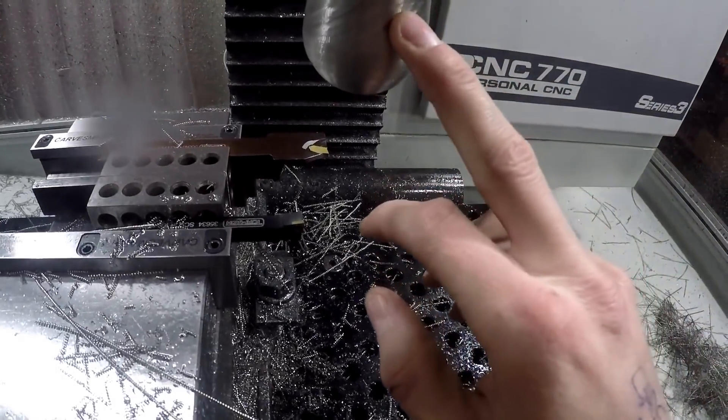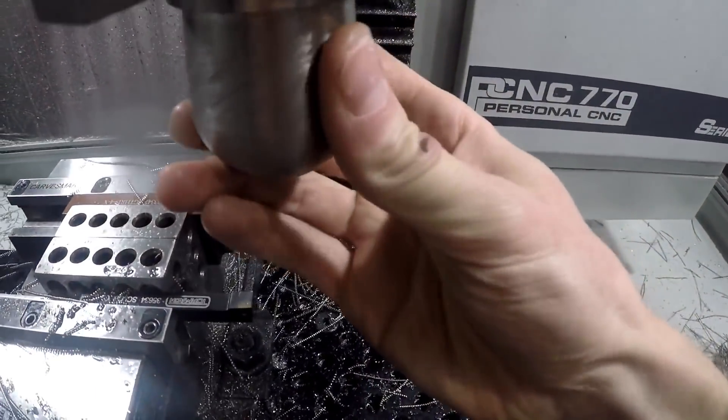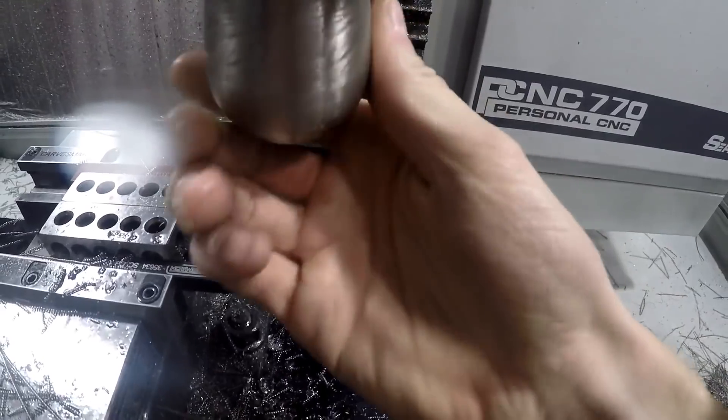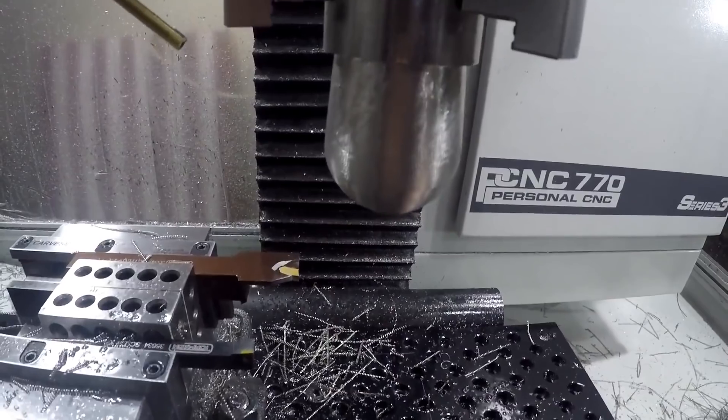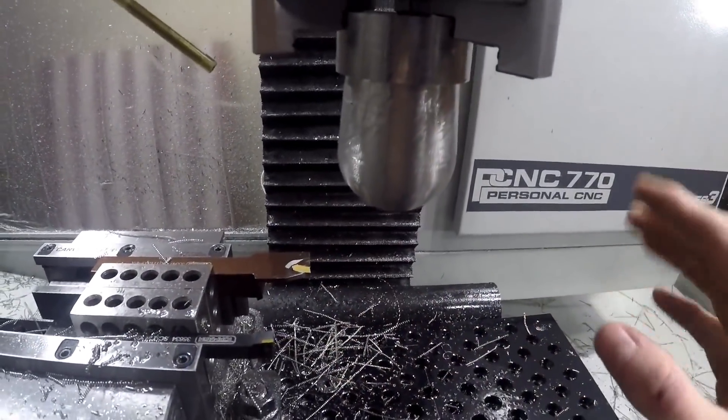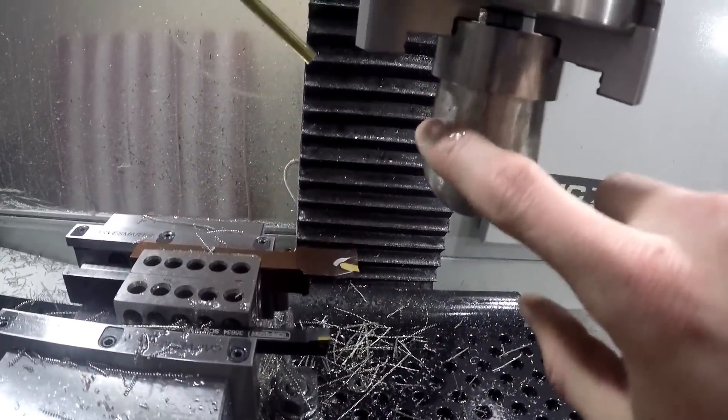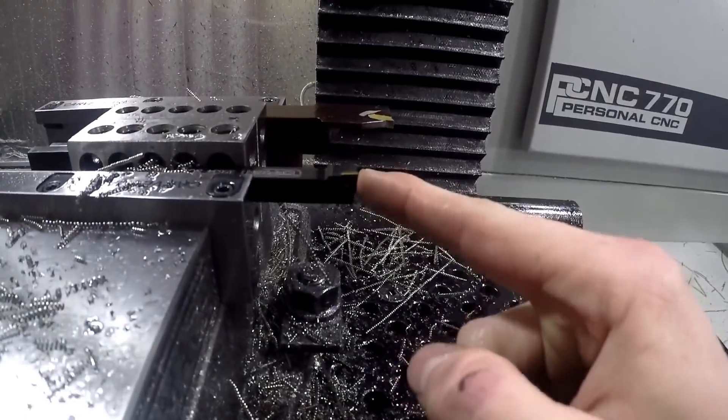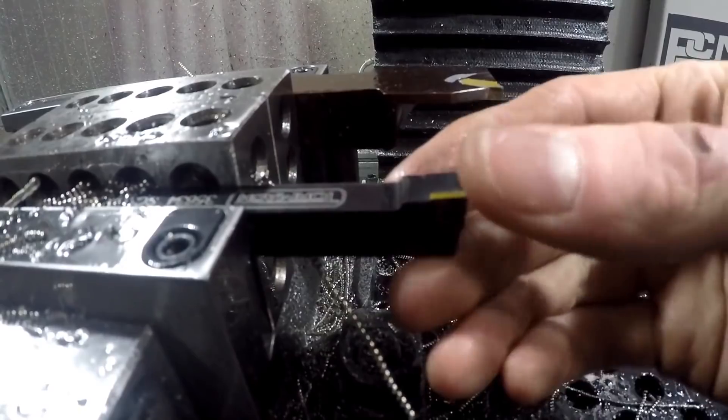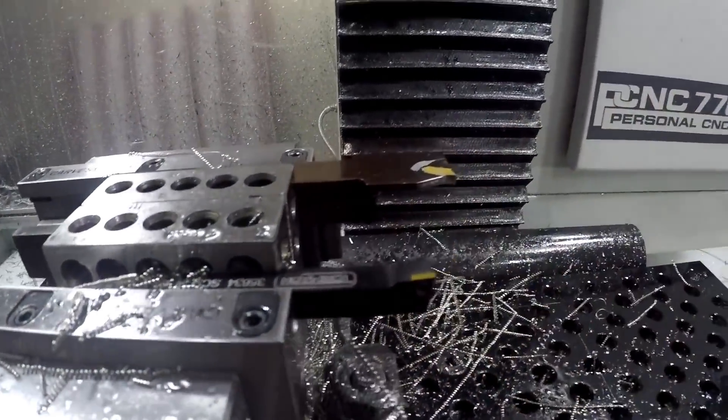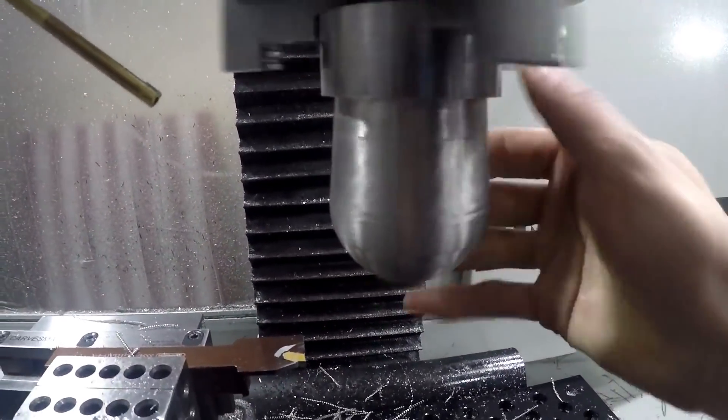I'm taking a very light depth of cut and that's why it's squealing so bad and chattering, leaving this pattern of chatter. When it goes up to cut the angled profile, it starts cutting on the side of this insert rather than the tip of the insert, and that's what's causing all that vibration and chatter. That is no good and kind of upsetting for this one.